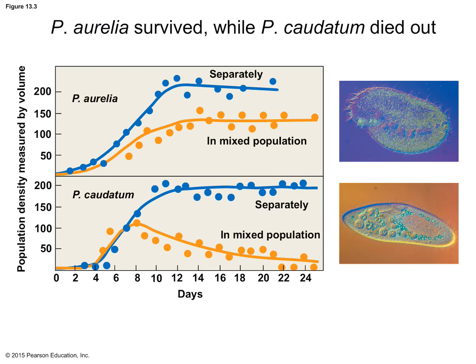Here's what he found. P. aurelia, when grown in isolation, showed logistic growth and eventually reached its carrying capacity. When grown in mixed culture with P. caudatum, P. aurelia survived but reached a carrying capacity at a lower density — significantly reduced, but it did not go to extinction, even though it was competing for the same bacterial food resource as P. caudatum.